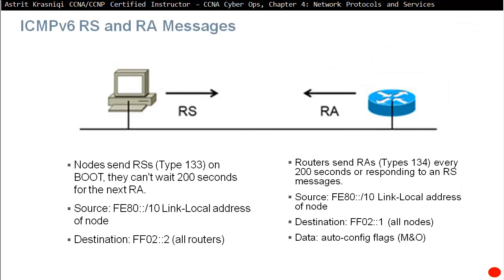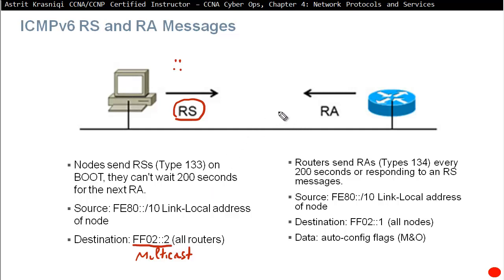Router Solicitation and Router Advertisement messages are also part of ICMPv6. If a device wants to find out what network it belongs to and has an unassigned IP address, it sends a Router Solicitation message. That message goes to the multicast address for all routers — ff02::2 — asking what its network address and IP address should be. This Router Solicitation message is type 133 and can be sent every 200 seconds or on boot.